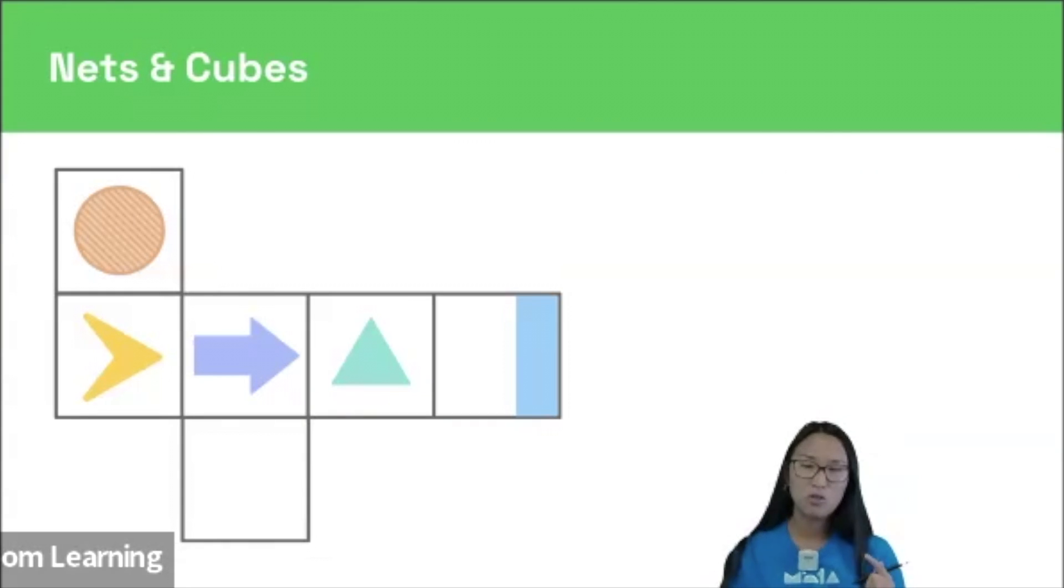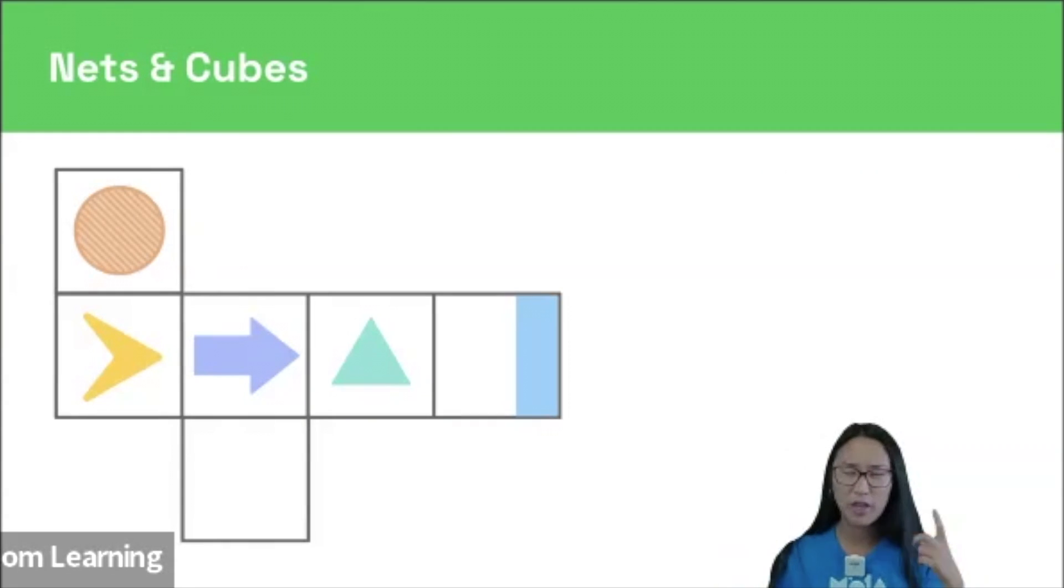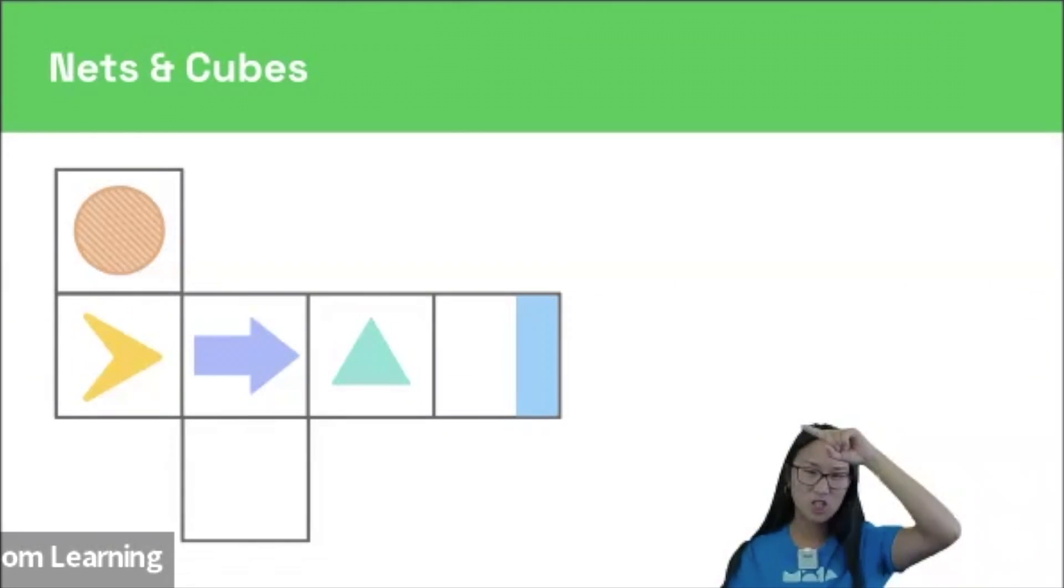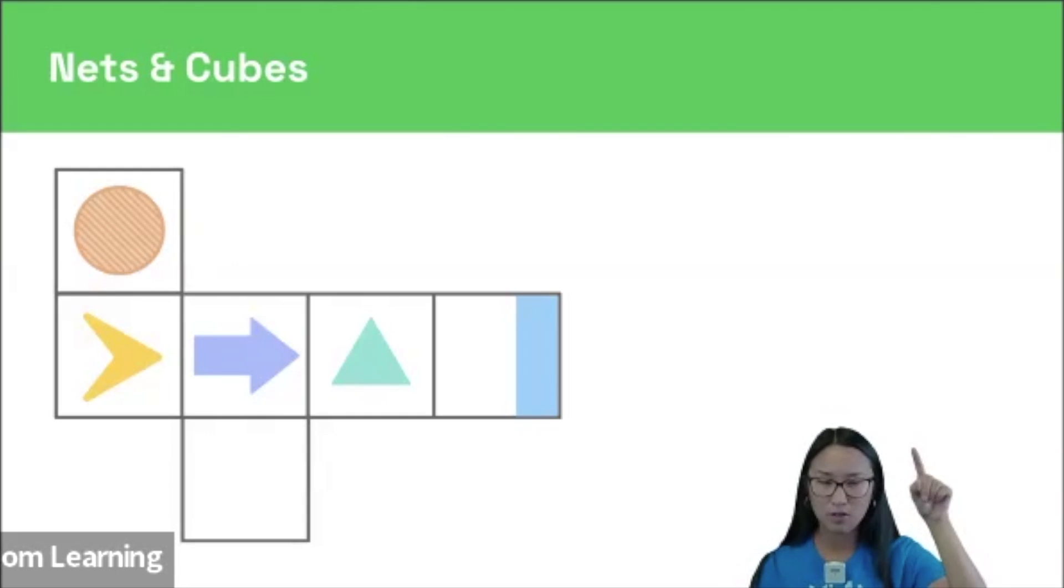When we are doing nets and cubes questions and we're thinking about the orientation rule, these are some key shapes to look out for. So arrows, you can look which way they're pointing towards. Triangles, again, you can figure out which way they're pointing. What's in the point? Lines, arrowheads, and then also stripy patterns, which are kind of lines but embedded within a shape. So arrows, triangles, lines, arrowheads, and stripy patterns. Look out for those.